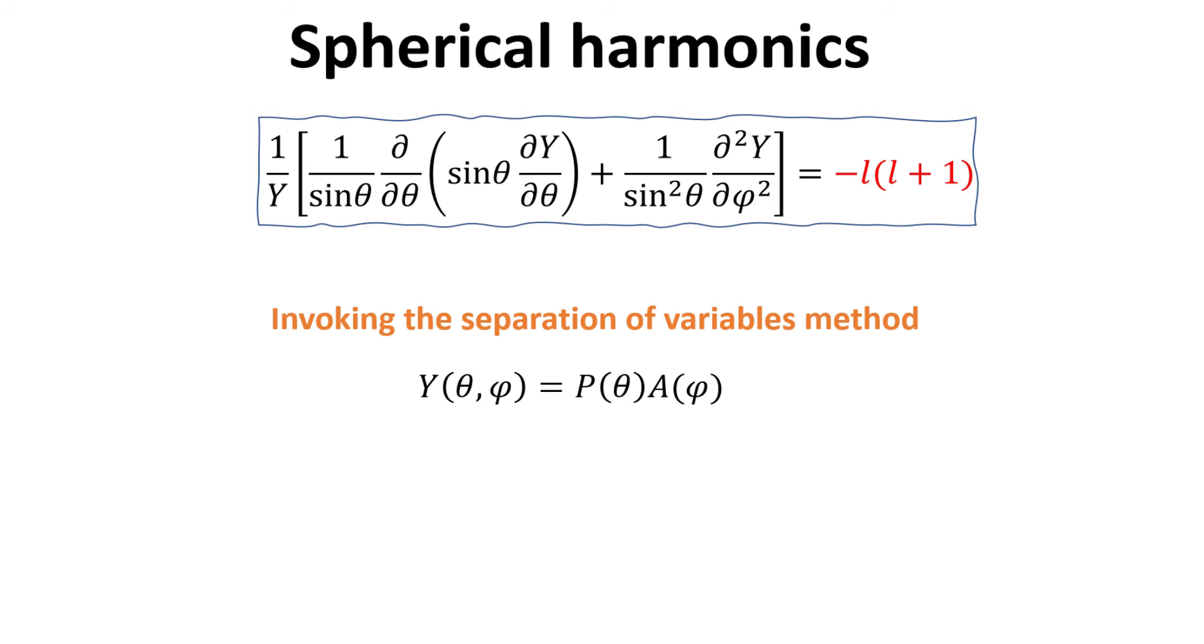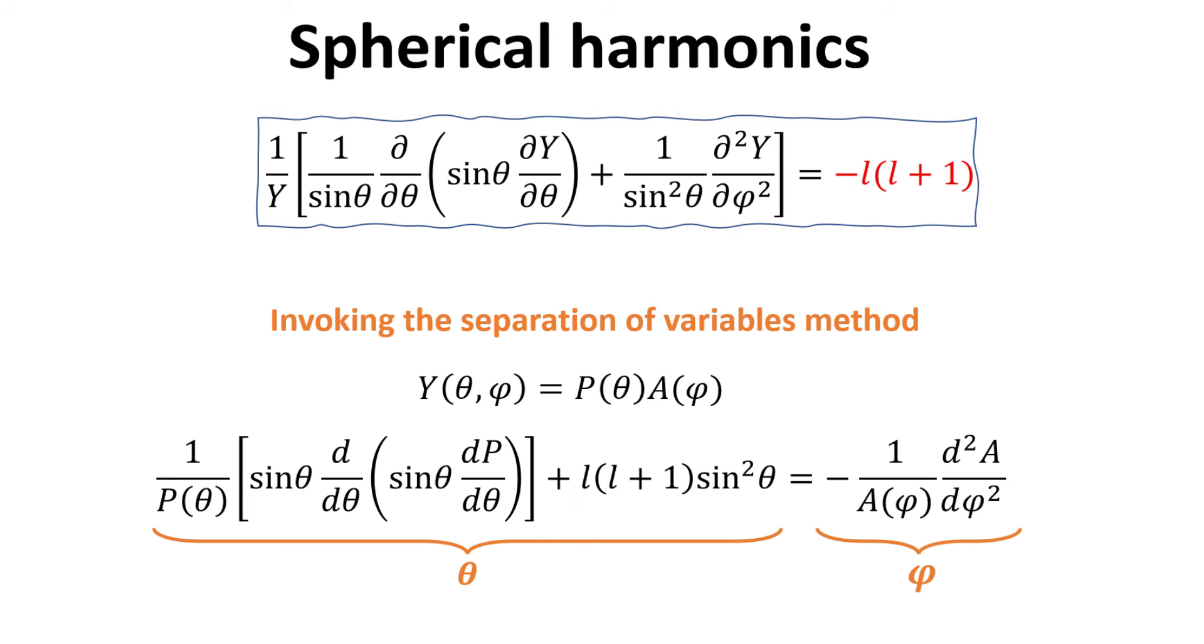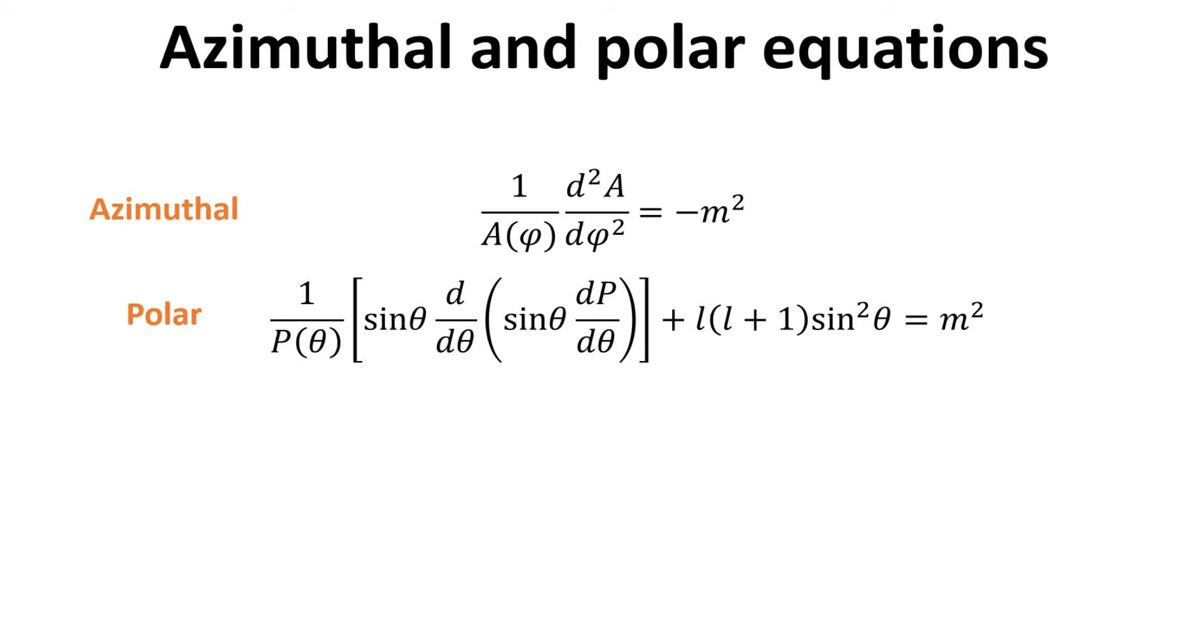To solve this angular equation, we invoke the separation of variables method, letting the solution Y be a product of two functions, P and A. P is only a function of the polar angle theta, and A is only a function of the azimuthal angle phi. Substituting this into the angular equation yields us a new angular equation, with the terms on the left-hand side being only a function of theta, and the terms on the right-hand side only a function of phi. Thus, for this equation to hold true, the left-hand side and right-hand side must each be a constant. Here, we let that separation constant be m square. We then arrived at two equations. One for the azimuthal part that depends on phi, and one for the polar part that depends on theta.